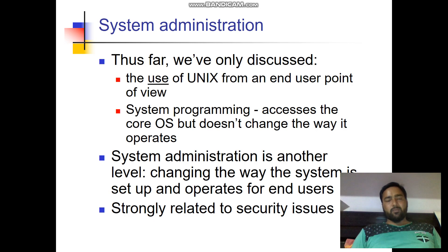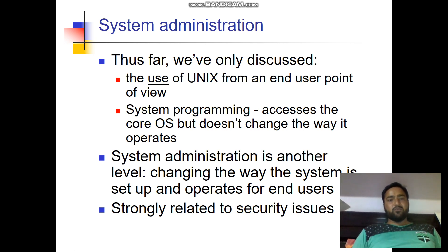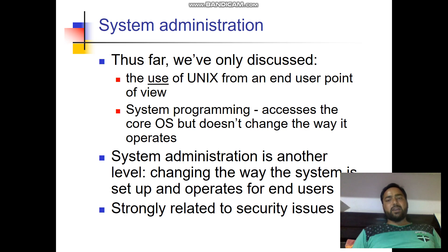Till now we have discussed the uses of Unix from an end user point of view — how the end user, the naive user, uses the system in its existing form. Then we discussed system programming, which accesses the core operating system through programming. We can access various core parts of the system, but we cannot change the way the system operates; the basic functionality remains the same.